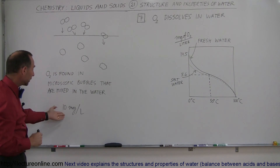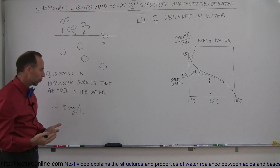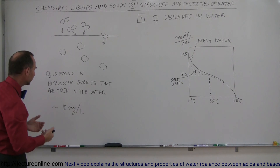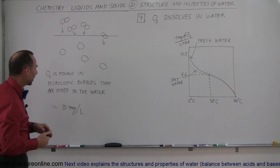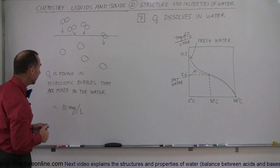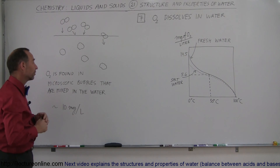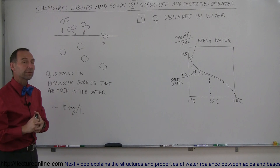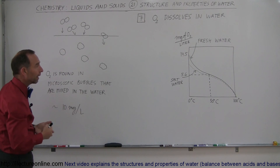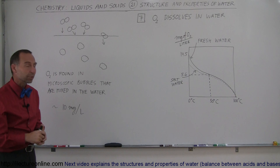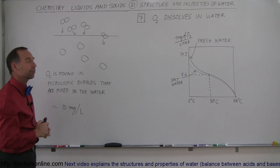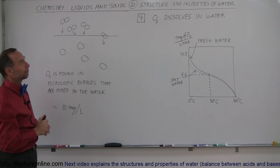Typically in normal conditions — around 10 to 25 degrees centigrade — you end up finding about 10 milligrams of oxygen per liter of water, and that enables all kinds of aquatic life to exist. It's a very special property; if it wasn't for that, life in the oceans would not be possible. So it's a very interesting and unique property of water.